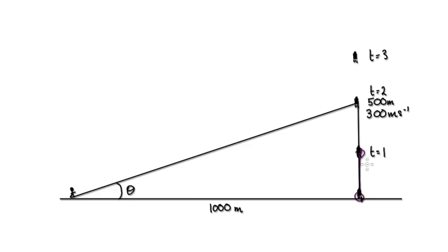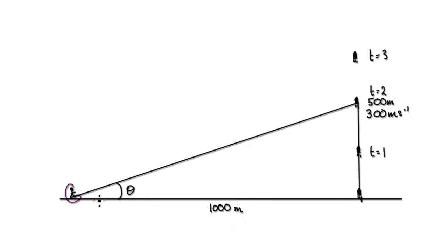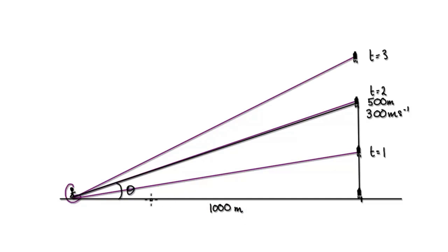So what that means is one second it would have travelled 300, another second later another 300, and another second another 300. You are standing 1,000 metres away from the rocket. Let's say you're trying to film this rocket. So you're trying to keep track of this angle here. One second later, the camera would have rotated this amount of an angle. Another second later, the camera would have rotated this amount of an angle.